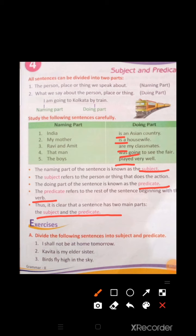Now, come to the exercise. Exercise A: Divide the following sentences into subject and predicate. Here are some sentences given and we will separate them into subject and predicate. Number 1: 'I shall not be at home tomorrow.' Here, 'I' is the subject part, and 'shall not be at home tomorrow' is the predicate.